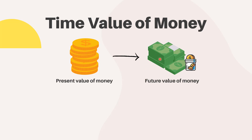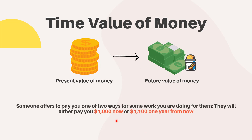The time value of money is sometimes referred to as the net present value of money. A simple example can be used to show the time value of money. Assume that someone offers to pay you one of two ways for some work you are doing for them — they will either pay you $1,000 now or $1,100 one year from now.